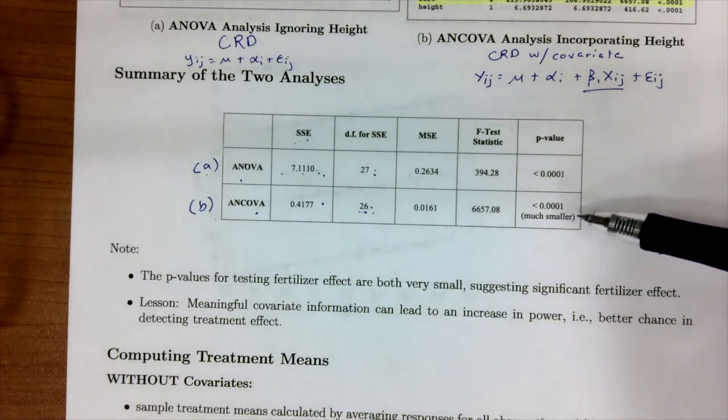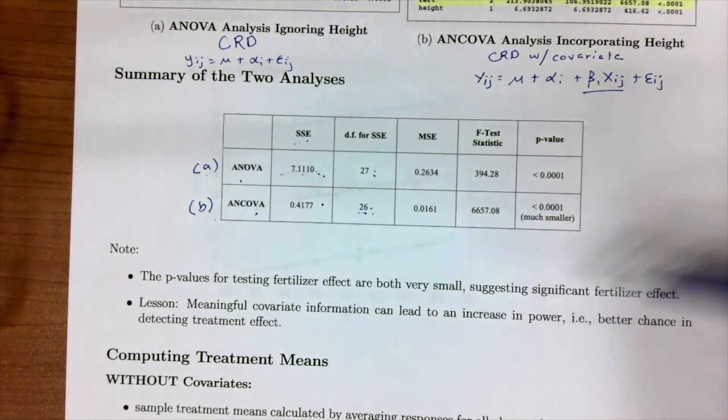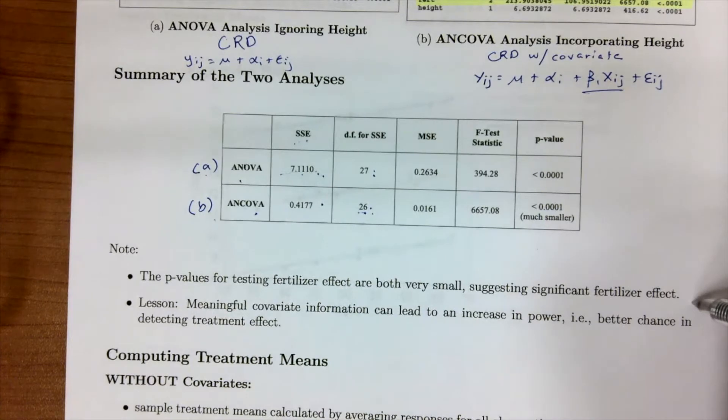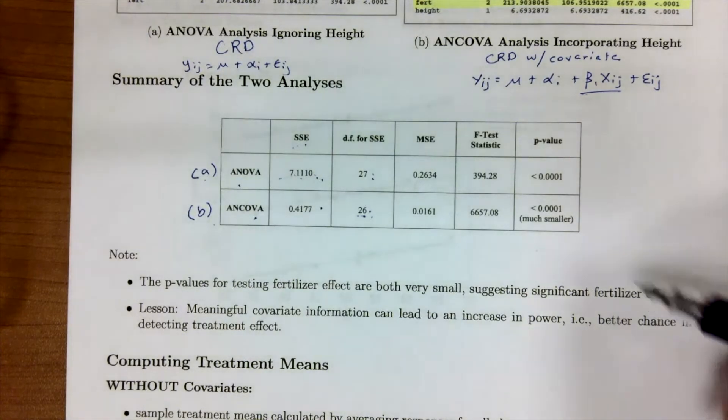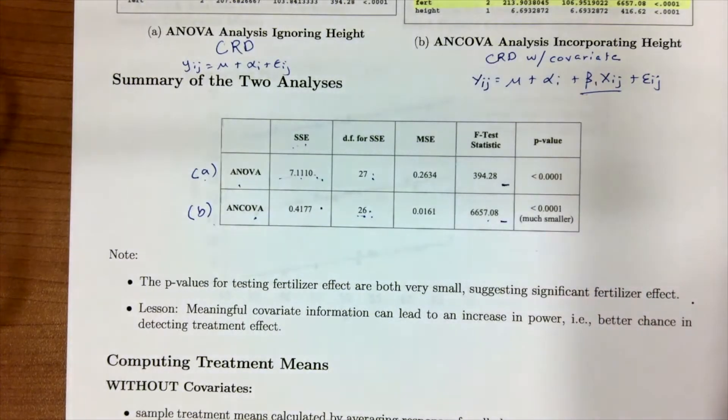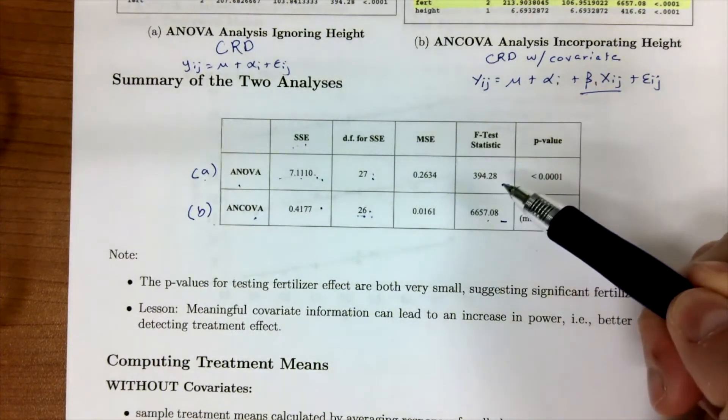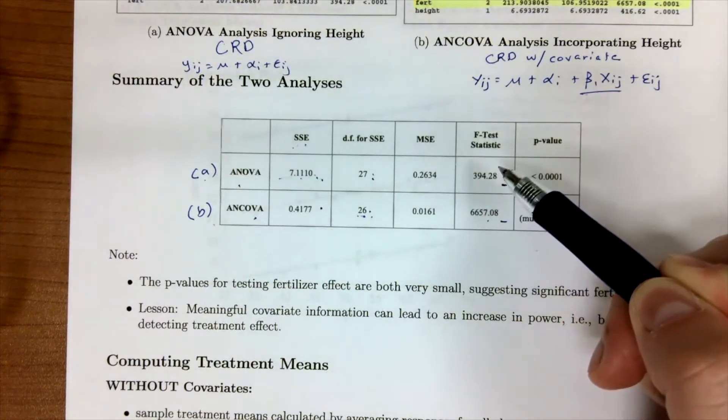We can see with both, the p-value for the fertilizer are small and are going to suggest there's a fertilizer effect. But the whole lesson and the whole idea behind this of why we introduced a covariate is that it's going to increase our power. Remember, power is our better chance of detecting a treatment effect when there is one. We can see that by looking at these F values and that our ANCOVA has a larger F statistic compared to our ANOVA. This p-value is much smaller compared to this p-value.